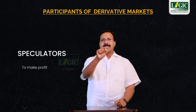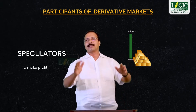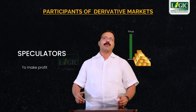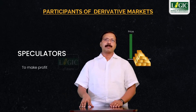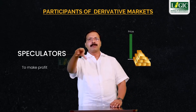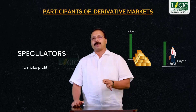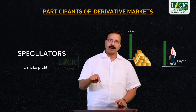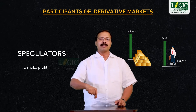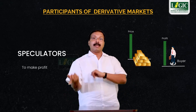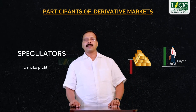For example, if a speculator has an idea that the price of gold may increase in a few days due to global uncertainties like the COVID pandemic, he would choose a long position — meaning he is acting as a buyer of gold. If the increase takes place as per his expectations, he has the opportunity to make a good profit. On the other hand, if the gold price decreases, against his expectation, he will suffer a huge loss.